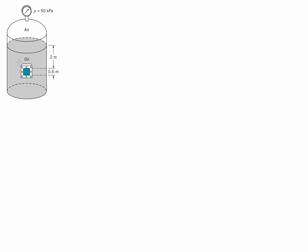Therefore the profile we're going to have for the pressure is not going to be triangular. So we need to determine first what is the pressure at the top and the pressure at the bottom of the plate. We're going to call it pt for pressure at the top, and that is going to be equal to p plus gamma of oil times h1, the height between the interface and the top of the plate.